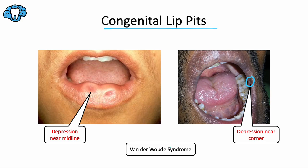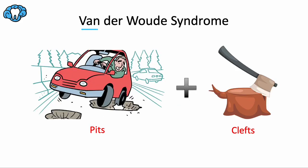Van der Woude syndrome is when lip pits occur in conjunction with cleft lip and/or cleft palate. A helpful memory trick: imagine a van hitting a bunch of potholes or pits on the road, and a piece of wood getting split with an axe — a synonym for split is cleft. So congenital lip pits plus cleft lip, cleft palate, or both gives you Van der Woude syndrome.